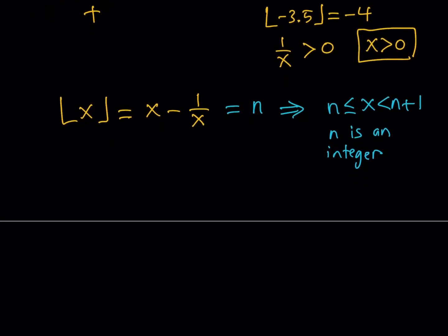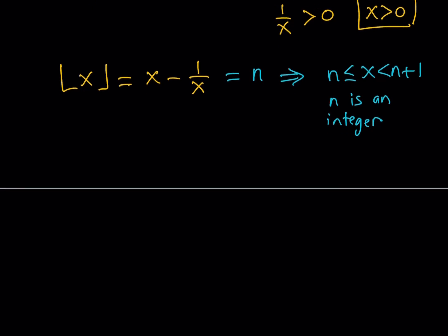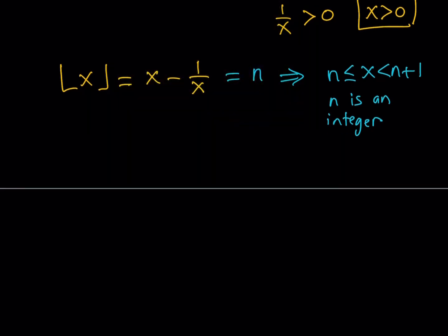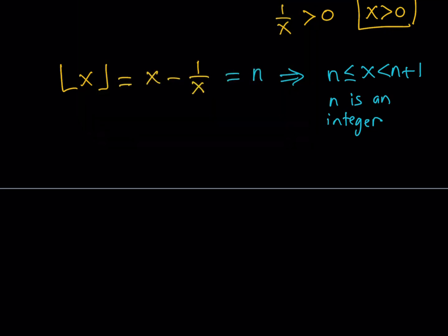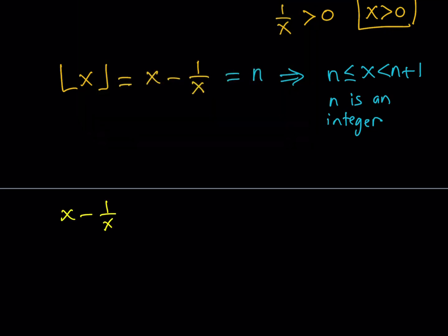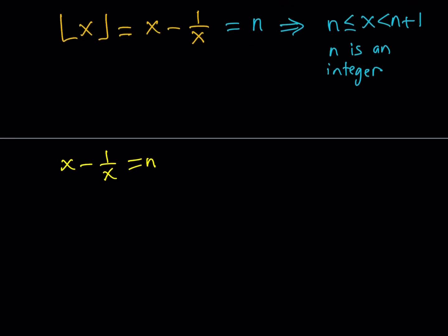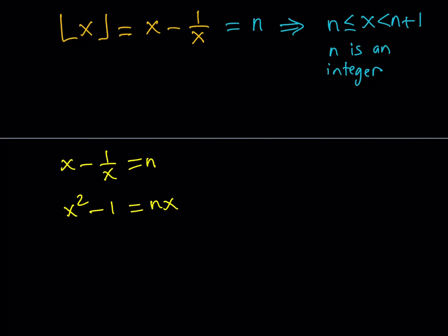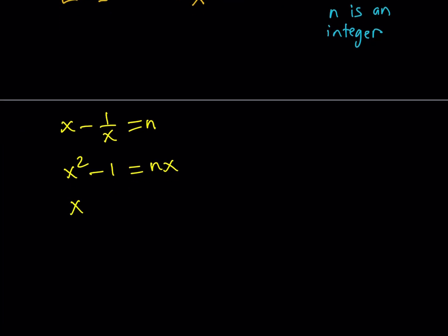We have the equation x minus 1 over x equals n. Let's multiply both sides by x — and obviously x does not equal 0, so it's okay to do that. That gives us x squared minus 1 equals nx. Just multiply both sides by the common denominator and you get a nice expression. Putting everything on the same side: x squared minus nx minus 1 equals 0.